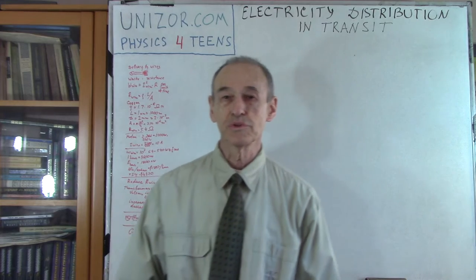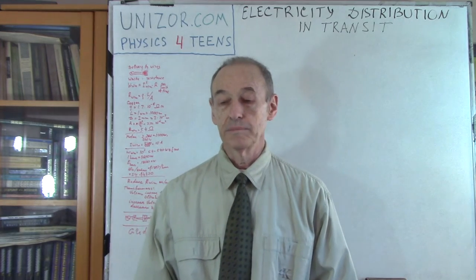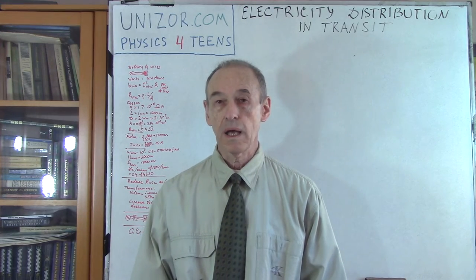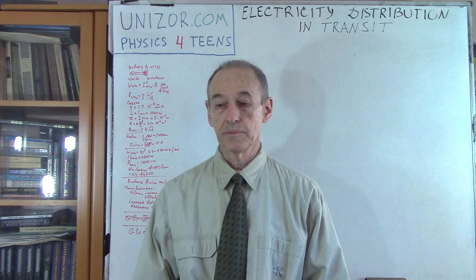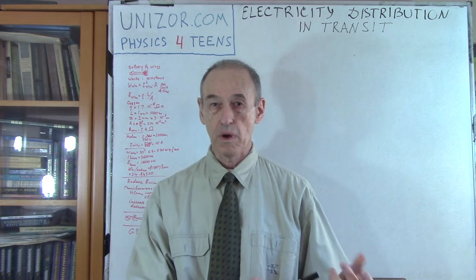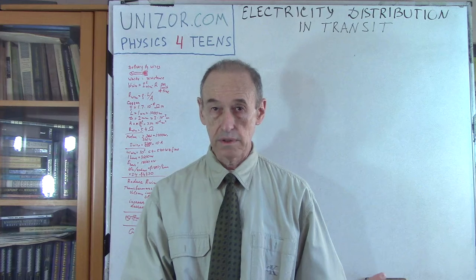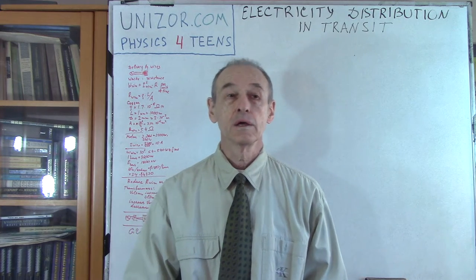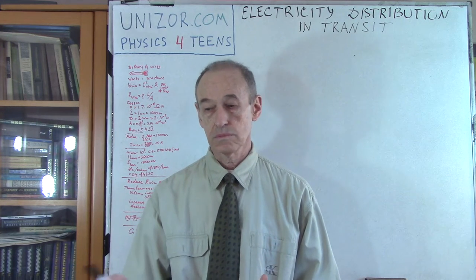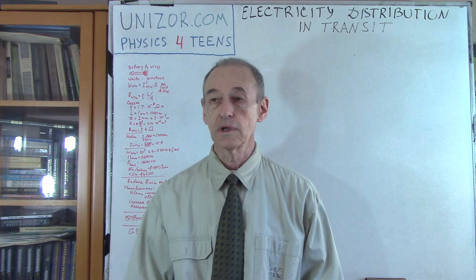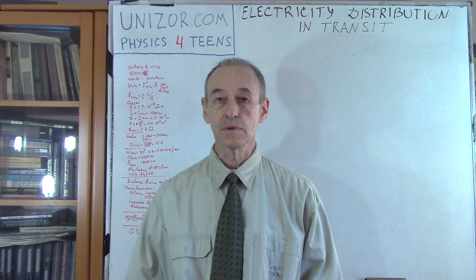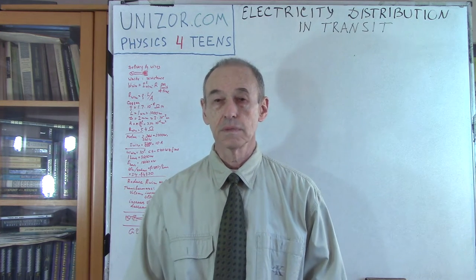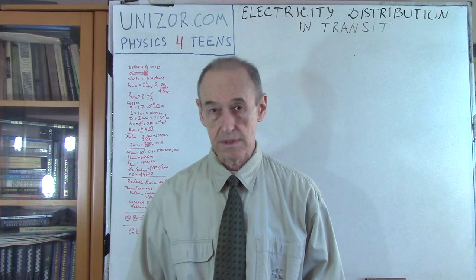Hi, I'm Zor. Welcome to Unizor Education. Today we will talk about how electricity is going from the source where it's produced, generated, like a power plant, to consumers, manufacturing, lighting on the streets, apartment buildings, houses, etc. So this is the transit basically, how this transfer of energy is arranged.